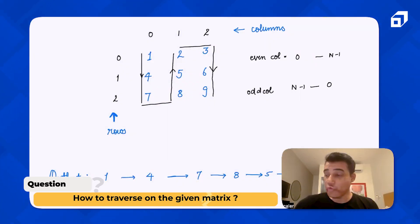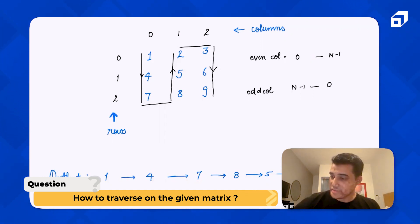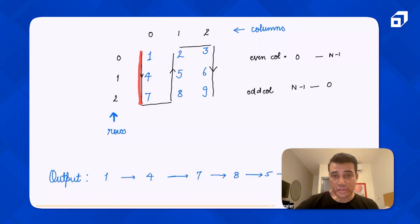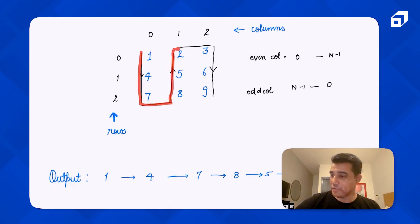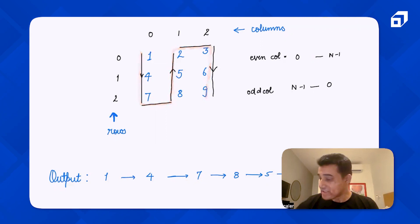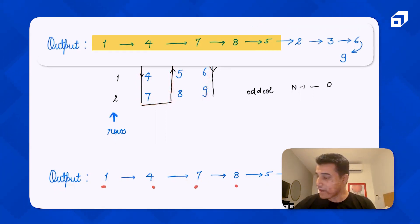The question is that you have to traverse the given matrix like this: first you go downwards, then to the right-hand side, then all the way up, then a little right, then all the way down. The output is going to be 1, 4, 7, 8, 5, 2, then 3, 6, and 9.